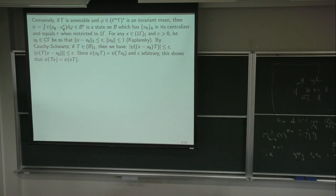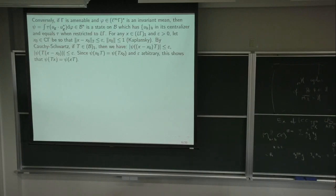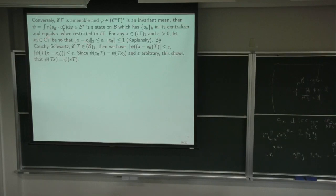Now, if M is a finite von Neumann algebra, I should point out it's equivalent to having amenability — having the hypertrace in the representation of M on L² — with having a hypertrace for any normal representation of M as a von Neumann algebra. There is also the injectivity property, which is quite trivially equivalent to the existence of a hypertrace: it requires the existence of a conditional expectation from B(H) onto M. That's what you call a von Neumann algebra being injective.